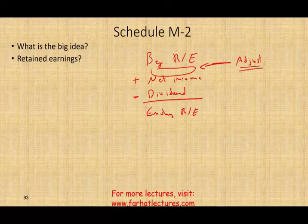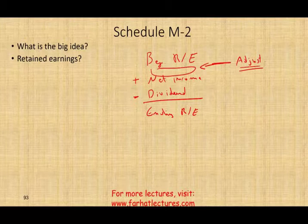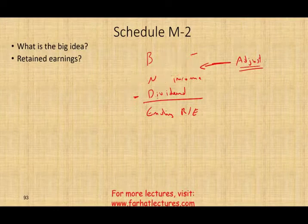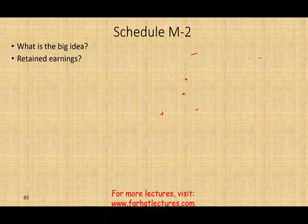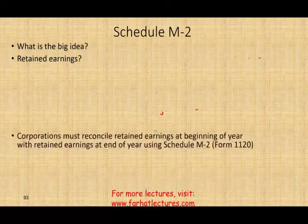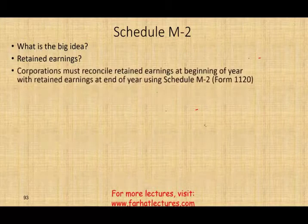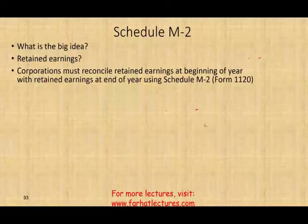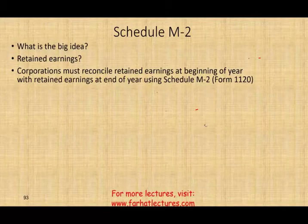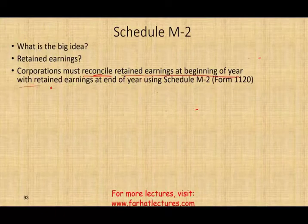If that adjustment leads to any taxable income, that's what they're looking for. So Schedule M2 gives them the opportunity to review any adjustments that happened. Sometimes they use the term 'unappropriated retained earnings' — unappropriated means not restricted by any internal or external party. Corporations must reconcile retained earnings at the beginning of the year with retained earnings at the end of the year using Schedule M2.